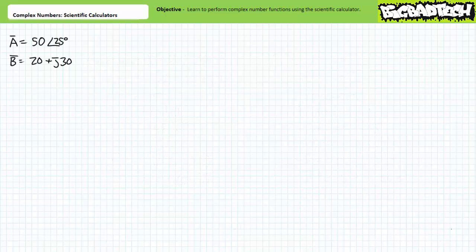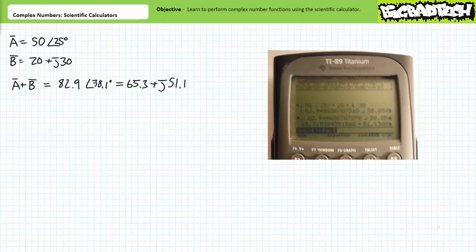Now that we're familiar with entry, interpretation, conversion, and basic operations of complex numbers using the scientific calculator, let's examine addition, subtraction, multiplication, division, and exponentiation of complex numbers. For our initial examples, we'll again use complex number A as 50 at an angle of 25 degrees, and complex number B as 20 plus J30. If we wish to perform the operation A plus B, I enter complex number A in polar, press plus, then enter B as 20 plus J30, and press enter. Note I'm mixing forms, but it's of little concern. I get the answer 82.9 at an angle of 38.1 degrees.